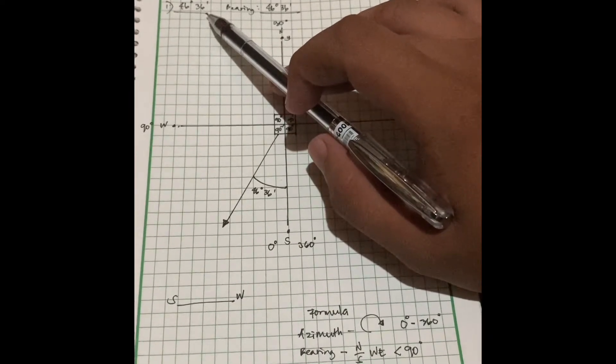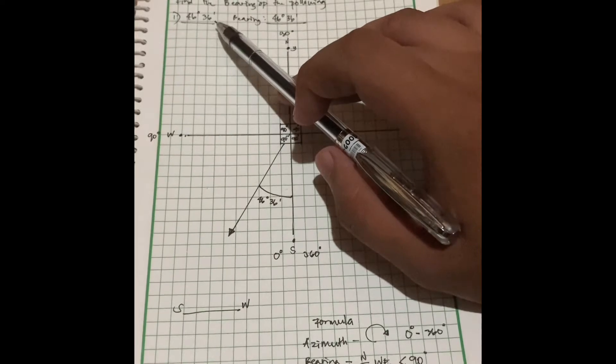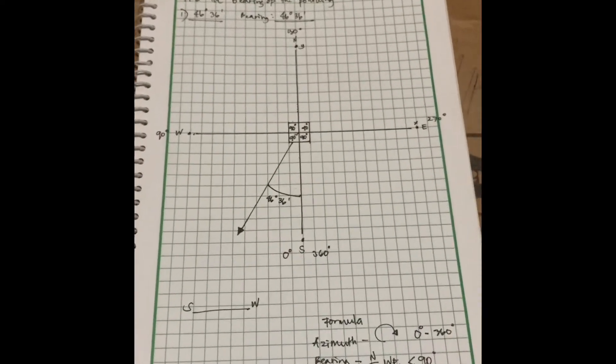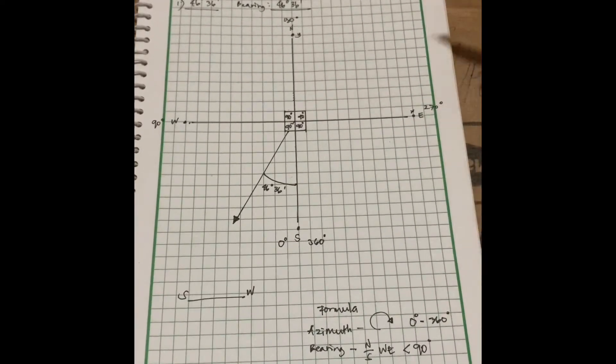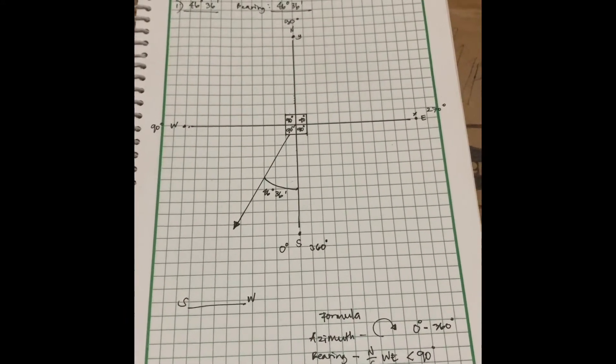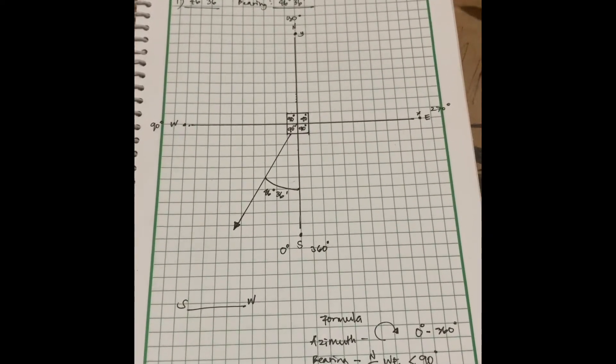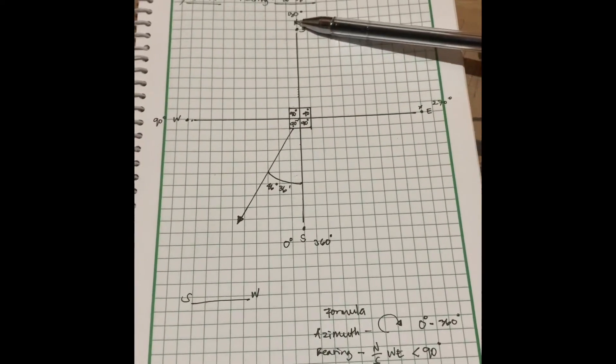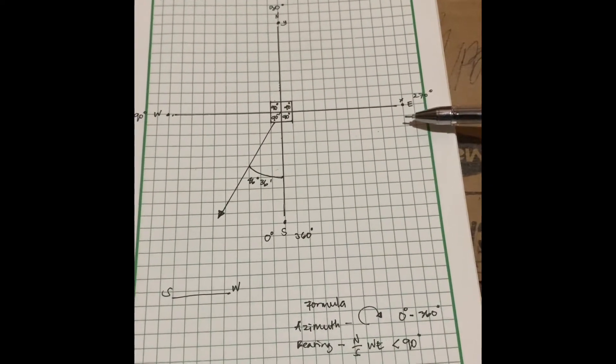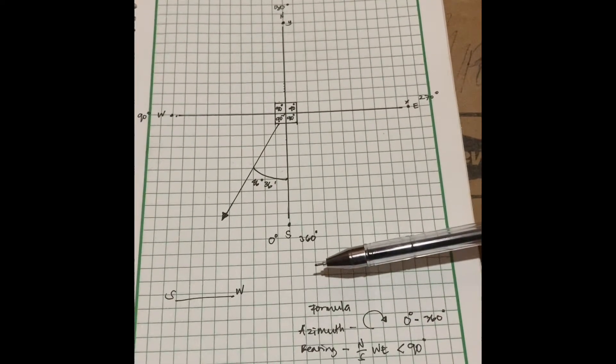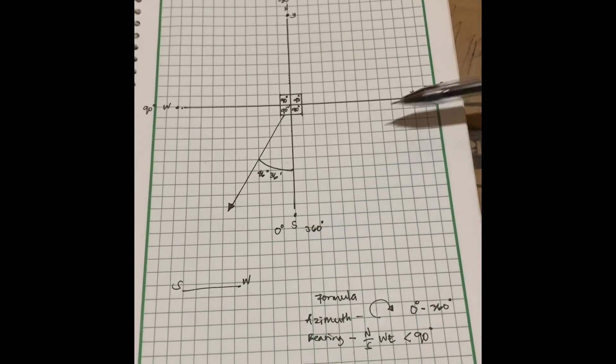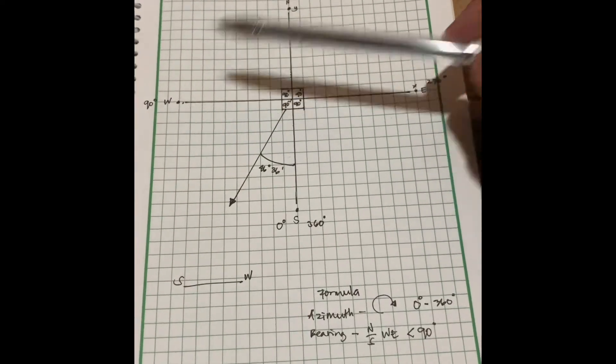I've prepared this diagram for a direct explanation. We'll draw what's called a Cartesian Coordinate Plane, marking the locations from north, south, east, and west.